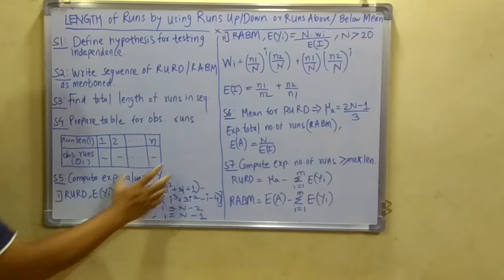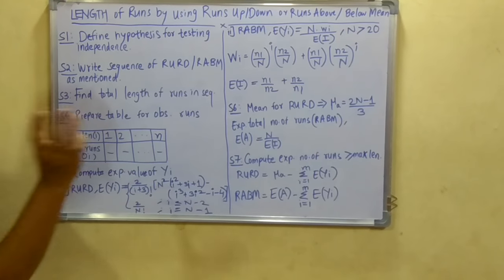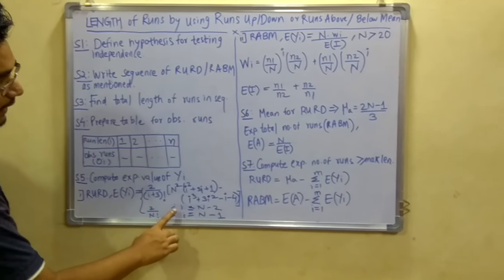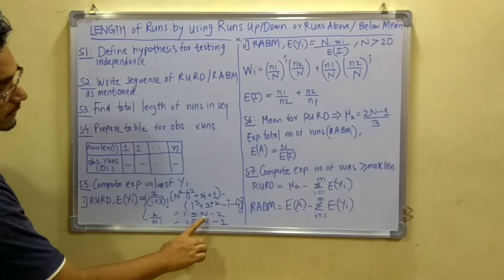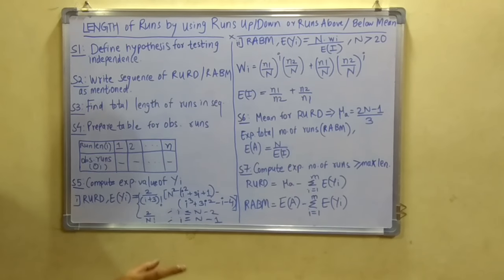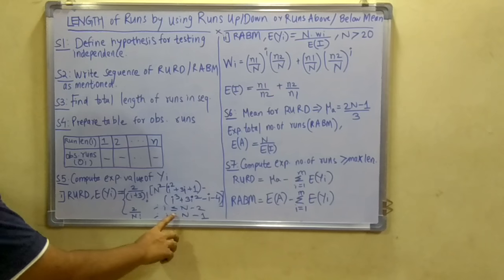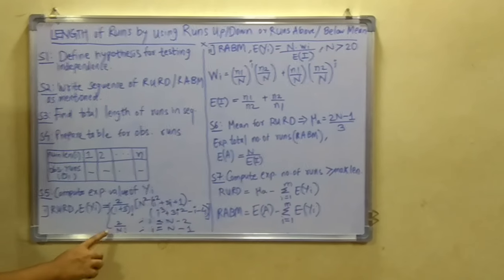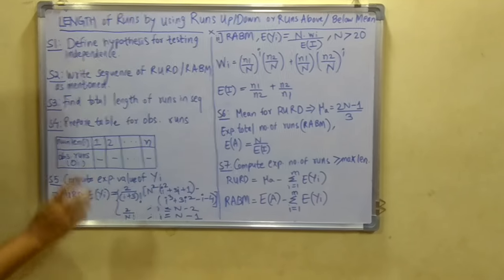Now this formula or expression will be applicable only if the value of i is less than or equal to n - 2. Otherwise, if the value of i equals n - 1, it will be 2 divided by n factorial.